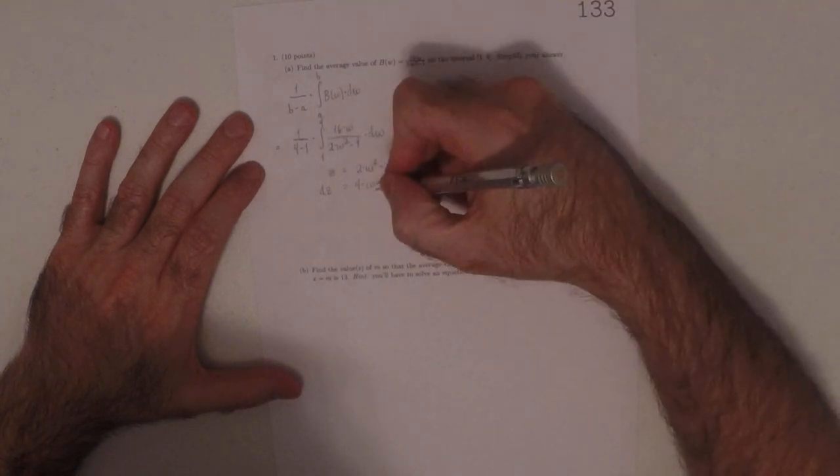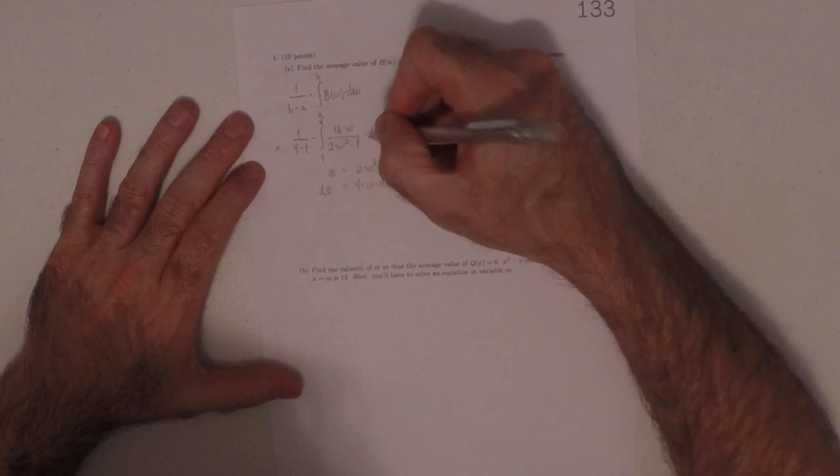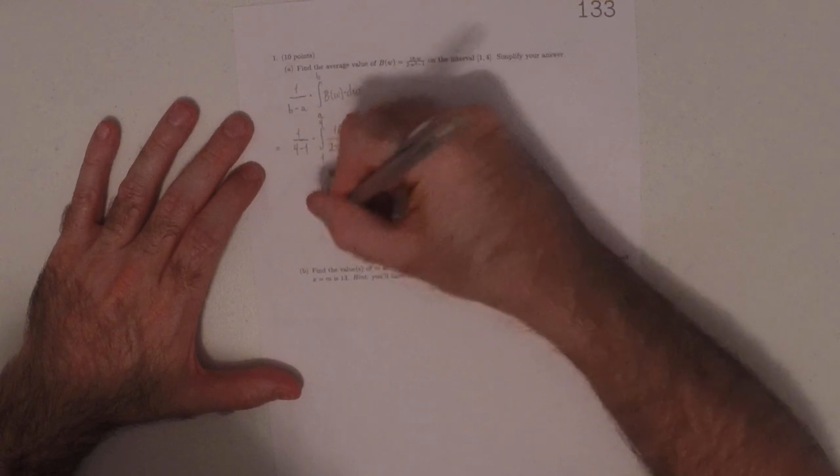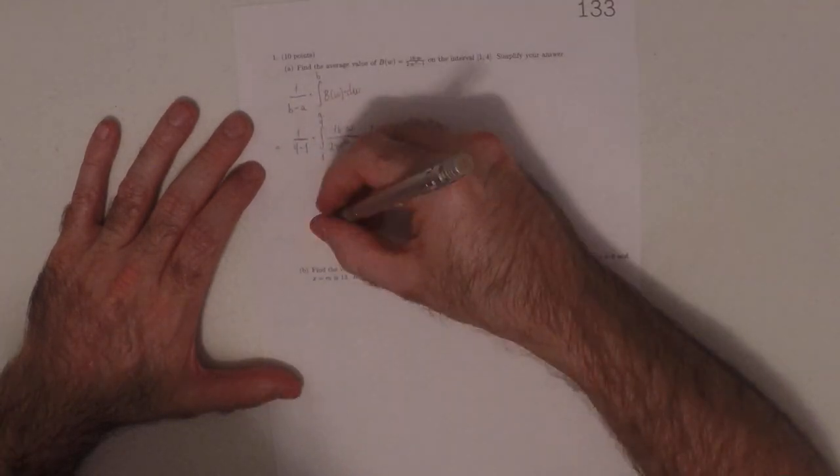Then we don't really have 4w, we've got that 16w. So I'll just replace the w dw with dz over 4 is w dw. And now I'll change the limits.